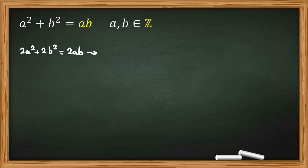And we can say a² + b² + a² + b² because we have 2a² and 2b² minus 2ab equal to 0.